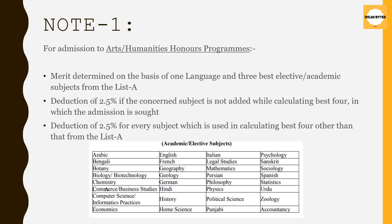Let's see what the criteria are for calculating the best 4 in BA Honors programs, that is, for Arts and Humanities. It will be on the basis of one language and any other three best elective and academic subjects from the given list. You can pause the video and check which subjects are listed. You can add only three subjects plus one language to calculate your best 4 for admission in BA Honors programs.